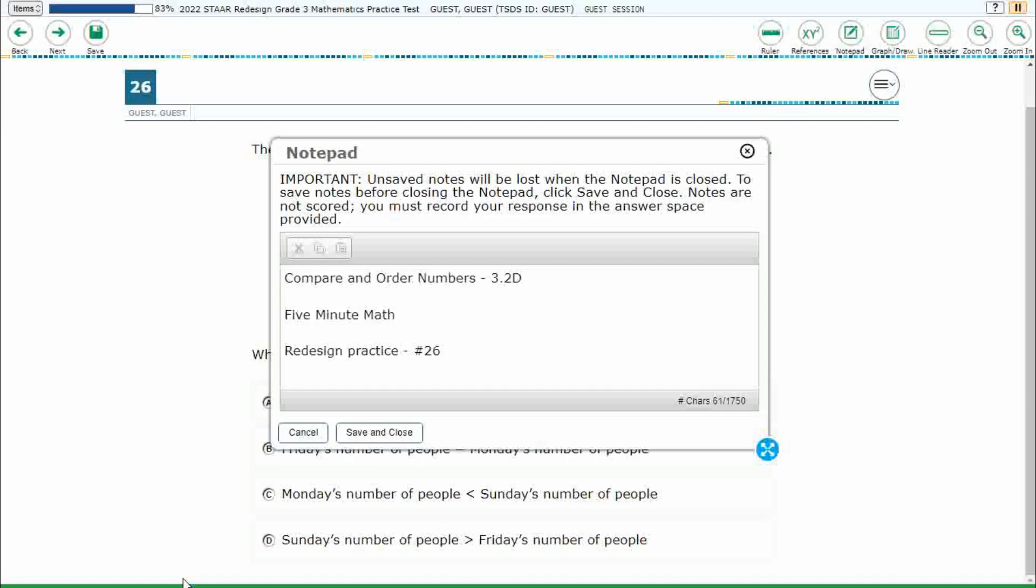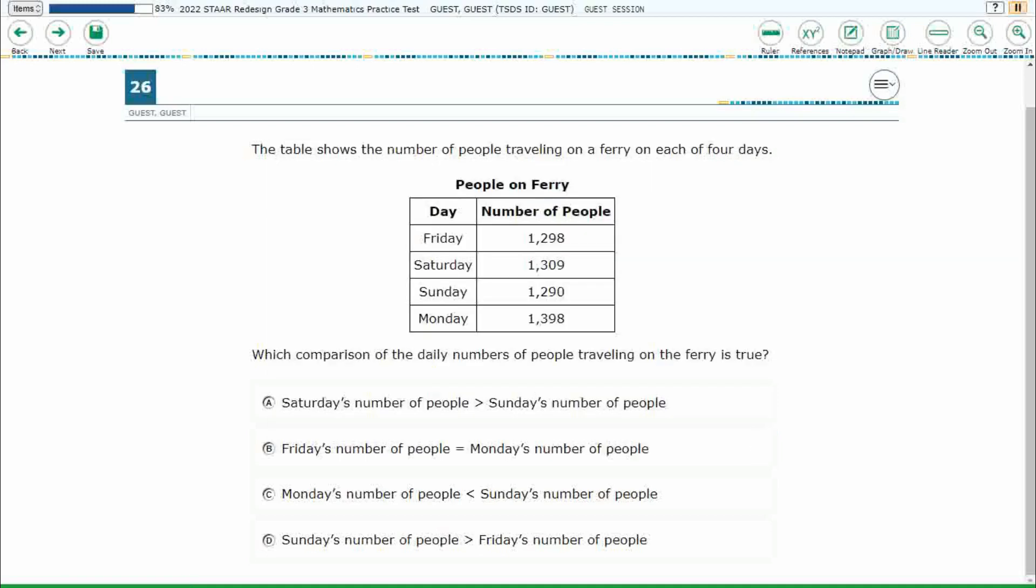Hello and welcome to 5-Minute Math. Today we are looking at the third grade concept of comparing and ordering numbers. This is standard 3.2D in the great state of Texas and we are using item number 26 off the Redesign Practice Online Start Test.